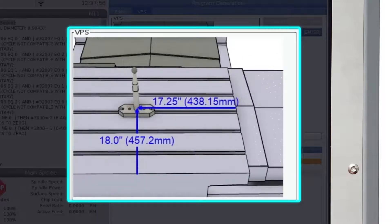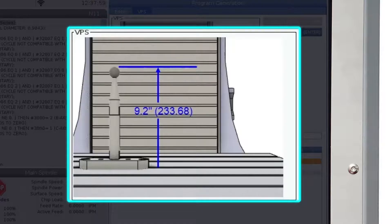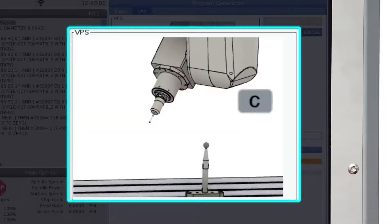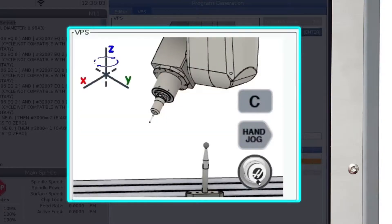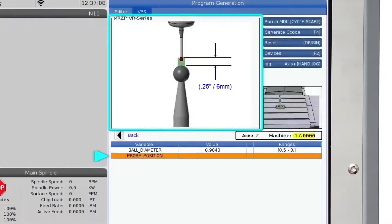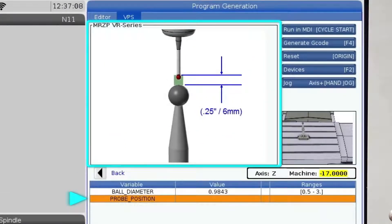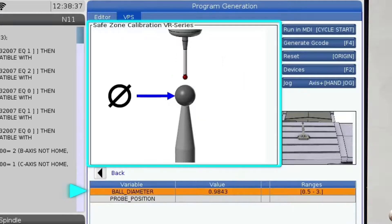Again, before entering the template, watch the animation to get information about the cycle. Jog the spindle probe to the correct position above the tooling ball, enter the tooling ball diameter in the template, and press cycle start to run the cycle.